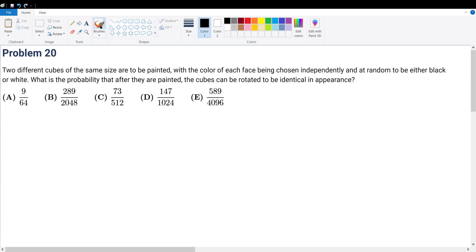Problem 20. Two different cubes of the same size have to be painted with each of the faces being black or white. After doing so, we're trying to find a probability that after rotating them, they'll be the exact same.